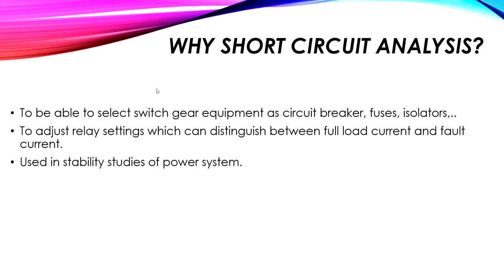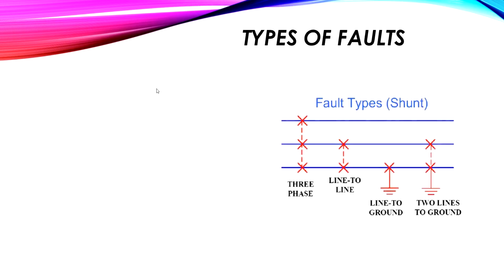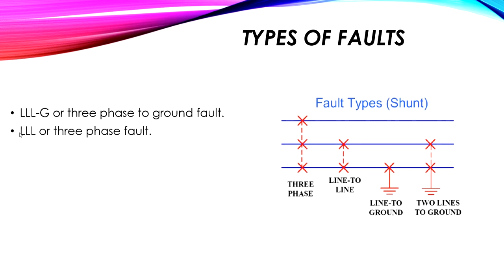Now, what are the types of faults in a power system? We have the three-line-to-ground fault, meaning all three phases are connected together with the ground. Another fault is line-to-line-to-line, or three-phase fault, where the three phases are connected together without the ground. Another type is the line-to-line fault, which means one phase connected with another — for example A with B, B with C, or A with C — two phases only, without the ground.